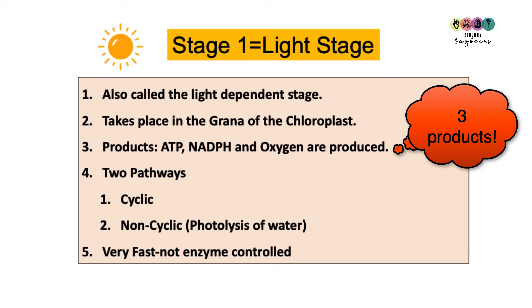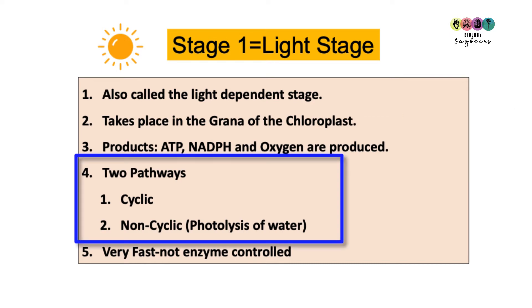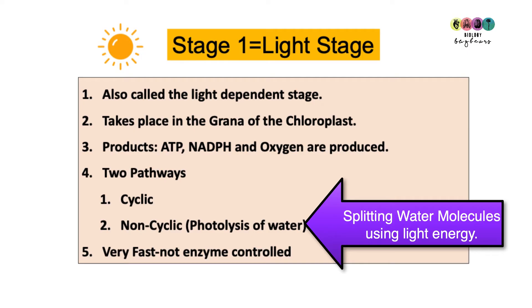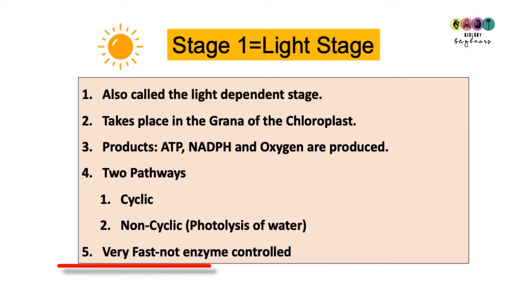There are two possible pathways. Pathway one is known as the cyclic pathway. Pathway two is known as the non-cyclic pathway, and this is where photolysis of water takes place. The reactions of the light stage are simply too fast to be enzyme controlled.